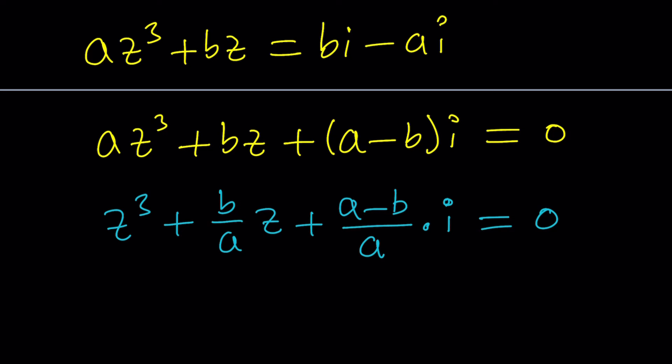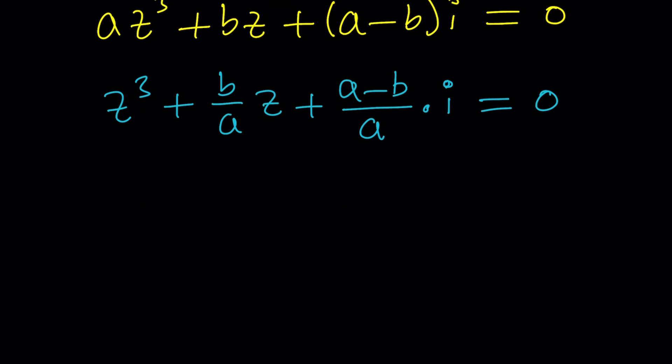If you want to simplify this process a little bit, you can assign different variables to this, like you can call this C and you can call this D, so that this equation is going to look simpler. And then use the cubic formula and then back substitute. You can definitely do that. So let's proceed with that.